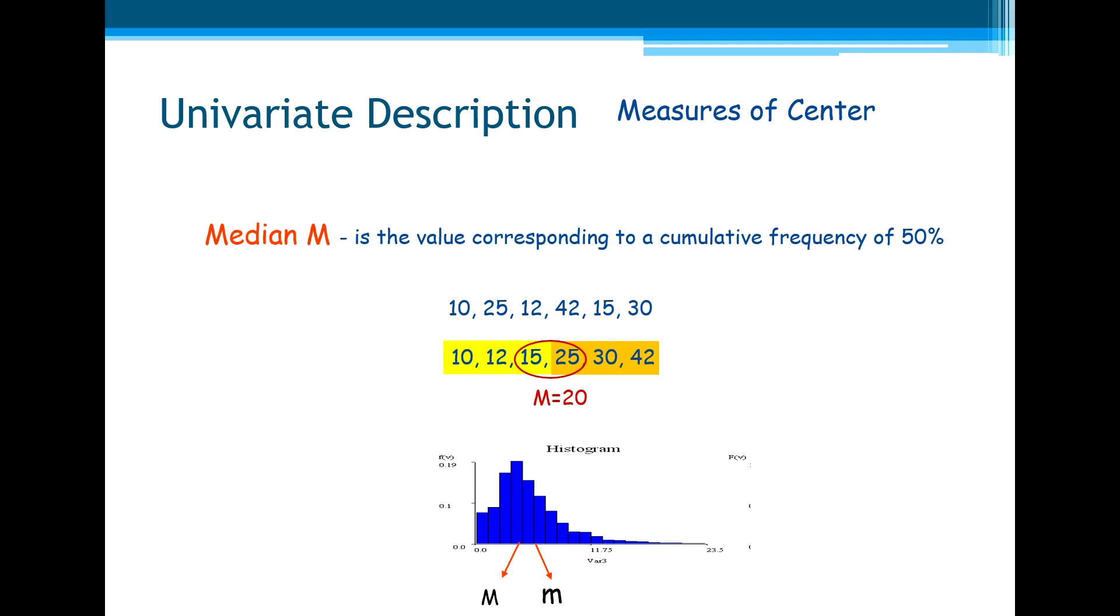This is the representation of the median and the mean of an asymmetric non-symmetric distribution, a high skew distribution.